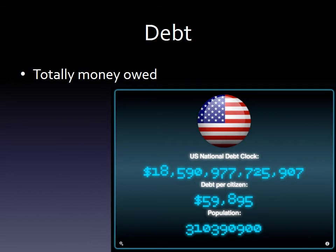Debt is the total amount of money owed — that number is about $19 trillion right now. When we talk about debt, we're talking about the total amount of money owed. Debt is different from deficit. Deficit is on a yearly basis — how much more the government spent than it brought in in revenue for one year. Debt is the sum of all money owed over time, so it's a much larger number. For instance, in 2015 our deficit for the year was somewhere around $450 to $500 billion, while our total national debt is more like $19 trillion.